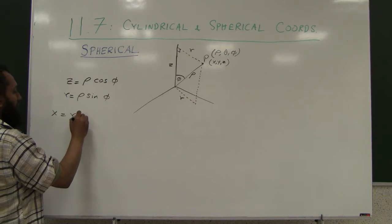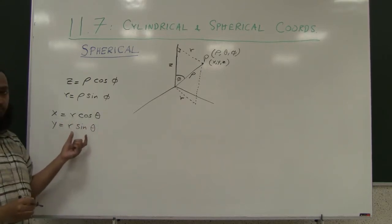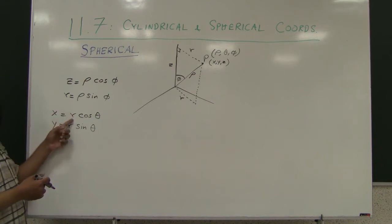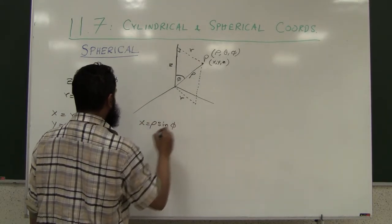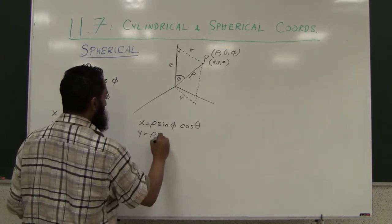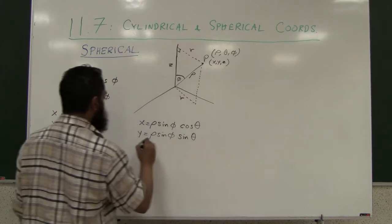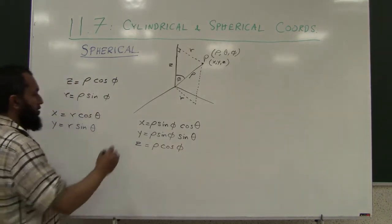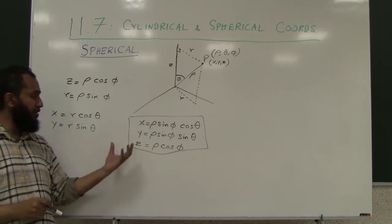We also know that X equals R cosine theta and Y equals R sine theta, coming from the polar coordinate system, which is the same in the cylindrical coordinate system. Plugging in R equals rho sine phi, we can conclude that X equals rho sine phi cosine theta, Y equals rho sine phi sine theta, and Z equals rho cosine phi.